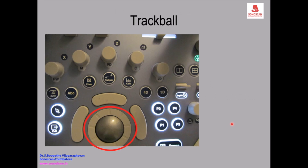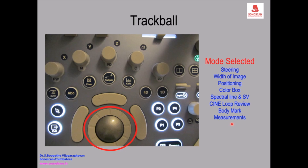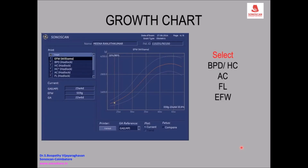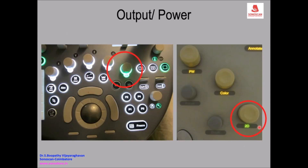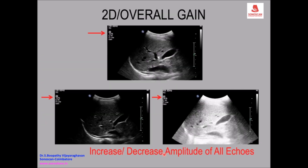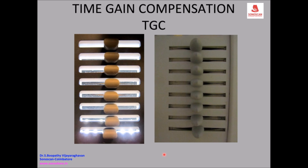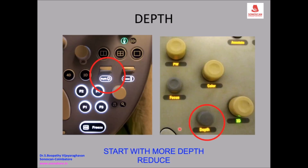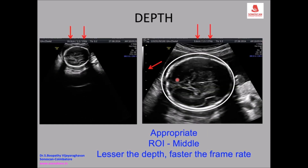First is the trackball — it is used for loop review, body marks, measurements, and many other functions. These are the biometric calculations; the most common formula used is the Hadlock formula. The output power control is used to increase or decrease the voltage. The overall gain control comes next, followed by the TGC — time gain compensation — control or toggle, both of which are available.